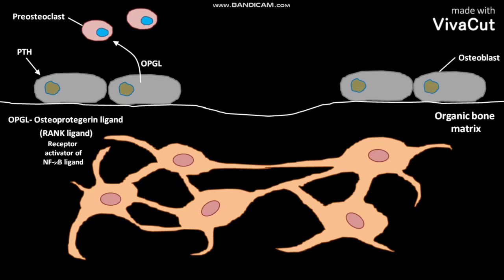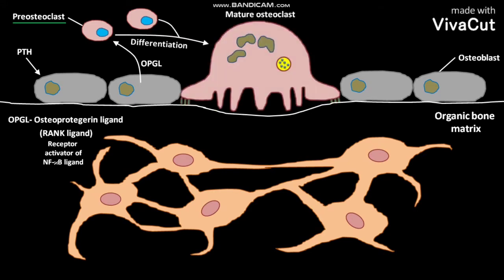The OPGL binds to the receptors on pre-osteoclasts and activates the receptor. As a result of this receptor activation, the pre-osteoclasts undergo differentiation to produce phagocytic mature osteoclasts. The mature osteoclasts then develop a ruffled membrane.